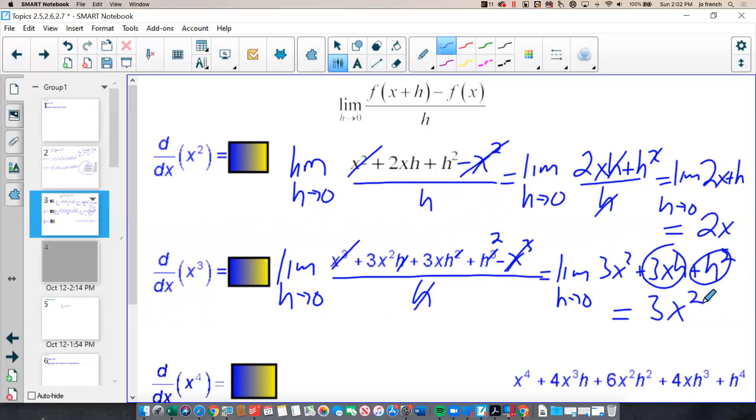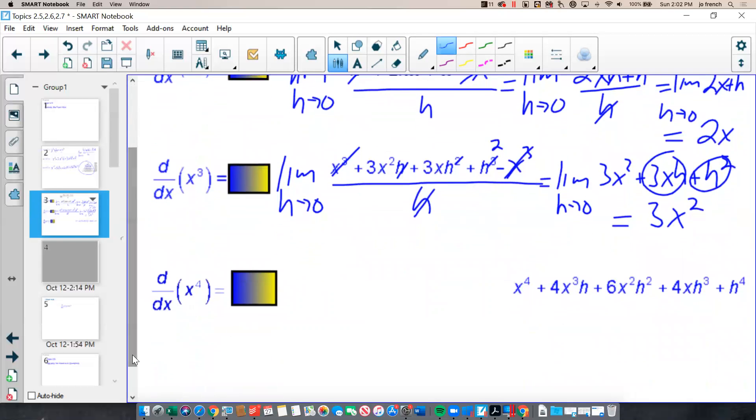Why don't you try x to the 4th on your own, and then we will come back and check our answers here. Okay, I'm assuming you tried it on your own and found that the derivative of x to the 4th was 4x cubed.